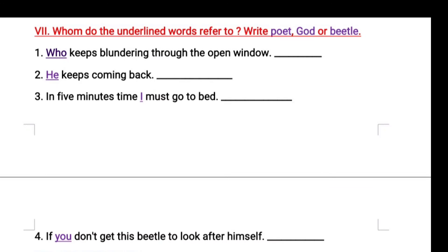Fourth: Why was Nehru arrested several times? Nehru was arrested several times for participating in the civil disobedience movement. Fifth: Which were the two institutes set up under Nehru's governance? The two institutes were the IIT — Indian Institute of Technology — and the All India Institute of Medical Sciences. Next, whom do the underlined words refer to? 'Who keeps blundering through the open window?' — refers to the beetle. 'He keeps coming back' — also refers to the beetle. 'In five minutes' time I must go to bed' — I refers to the poet. 'If you don't get this beetle to look after himself' — you refers to God.